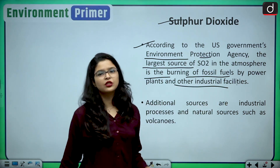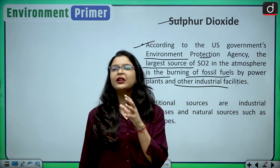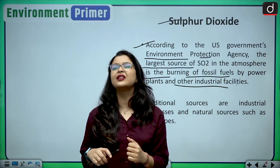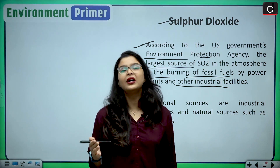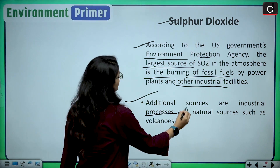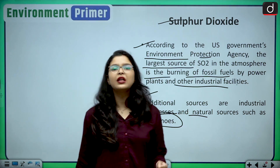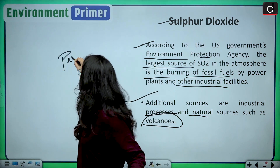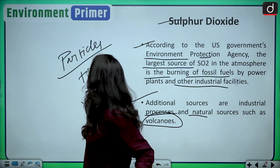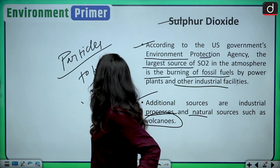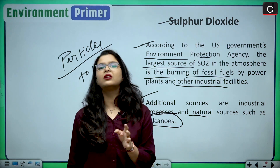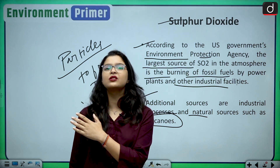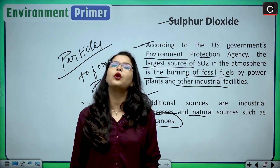Industrial facilities are also a source of sulfur dioxide. Industrial pollution is a very common source of dust particles that settle in the air and pollute it. Additional sources include industrial processes and natural sources such as volcanoes. The most hazardous characteristic of sulfur dioxide is that it can react with other particles to form particulate matter, which is then inhaled by us and causes various breathing issues.